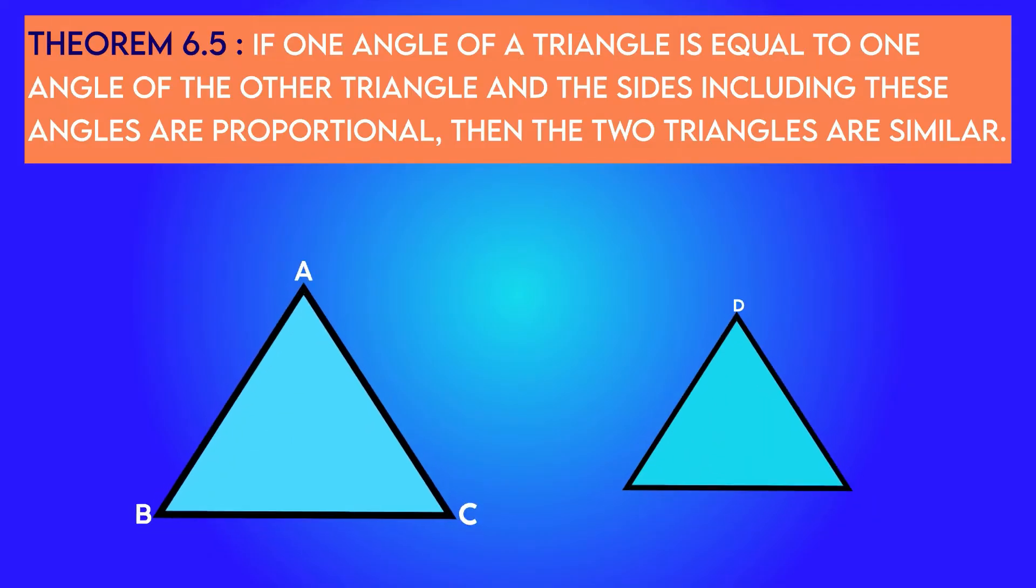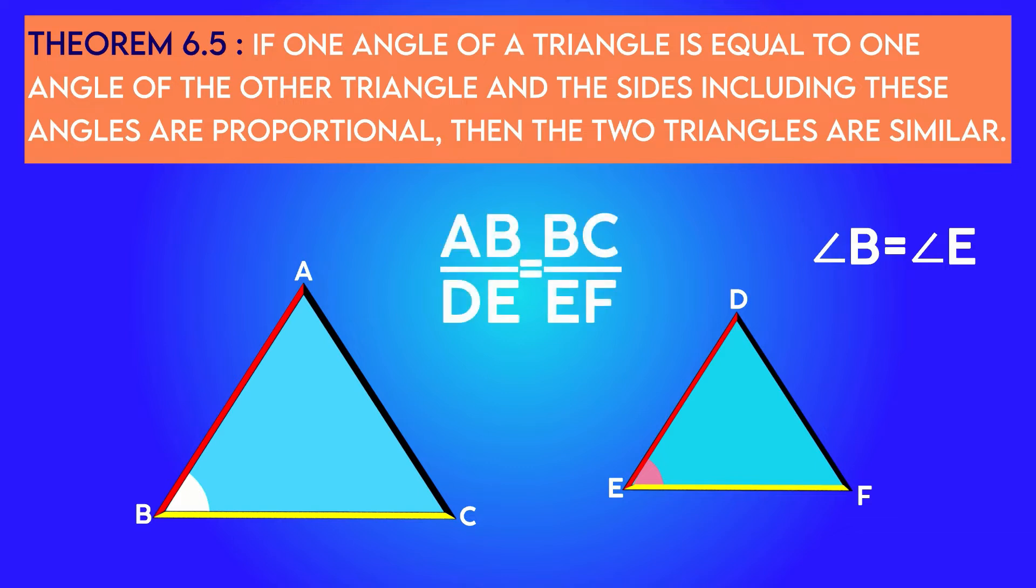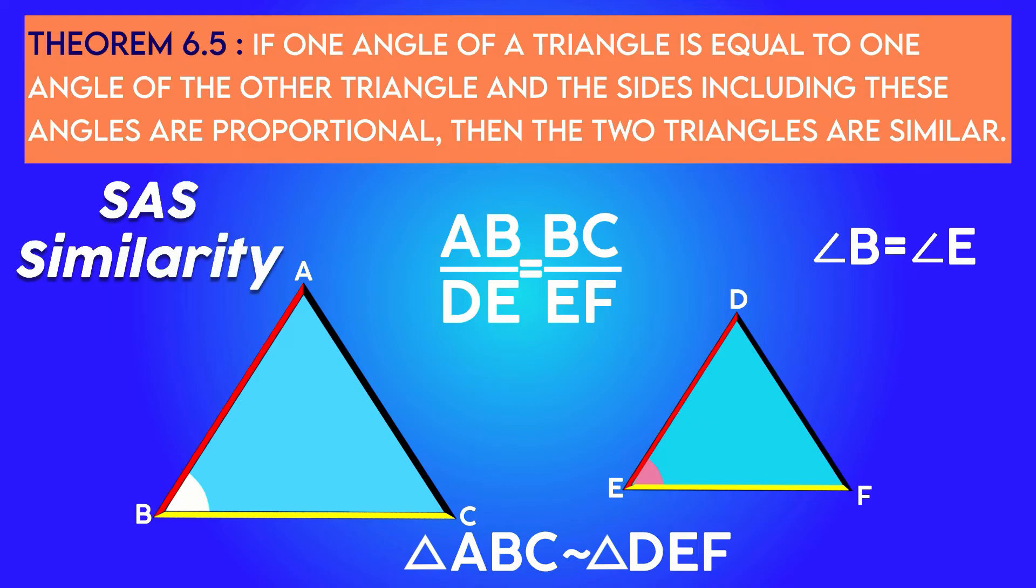Theorem 6.5: If in two triangles the angle of one triangle equals the angle of the other and the sides constituting these angles are proportional, then these two triangles are similar to each other. This is known as the SAS similarity.